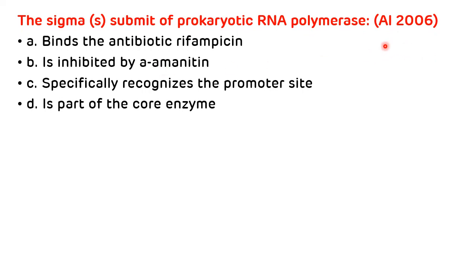Third question from All India 2006: what does the sigma subunit of the prokaryotic RNA polymerase do? Options include binds the antibiotic rifampicin, is inhibited by alpha-amanitin, specifically recognizes the promoter site, or is a part of the core enzyme. The correct answer is C — the sigma subunit is important for recognition and binding to the promoter site, which includes the Pribnow box and the minus 35 nucleotide sequence.